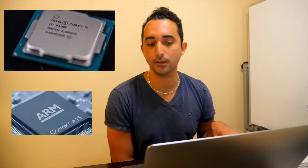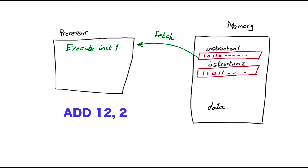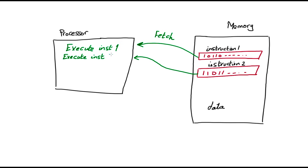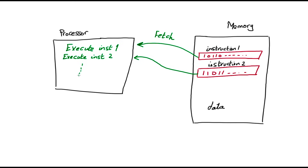Each processor has its own set of instructions it can understand. For example, the instructions an Intel processor understands are different from those an ARM processor understands. We call this the instruction set architecture. The processor's job is simple: it fetches an instruction from memory, understands what it means, and executes it. For example, the first instruction might be to add two numbers together, and the second instruction might be to save the result somewhere in memory — in the data section. This is how any program runs.